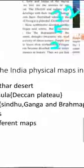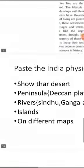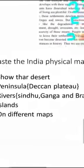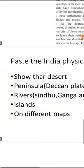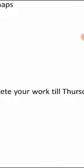Now children, please listen carefully. There is a map of India showing the Deccan Plateau, Thar Desert, and everything in your textbook. You have to paste 4 Xerox copies of the map on 4 different pages. In the 1st map, highlight only the Thar Desert. In the 2nd map, show the Peninsula, that is the Deccan Plateau. If you see my earlier video, you will know how I have marked it. In the 3rd map, show rivers: Sindhu, Ganga, and Brahmaputra. On the 4th map, mark islands. You have to complete your work by Thursday.